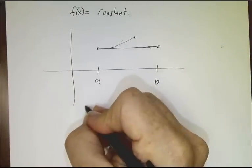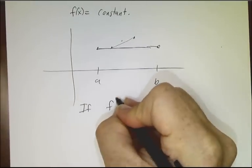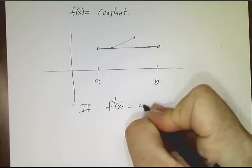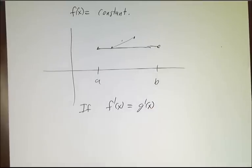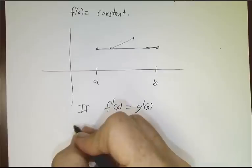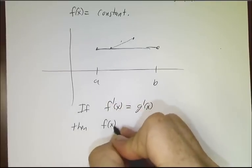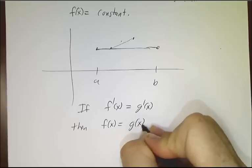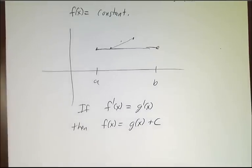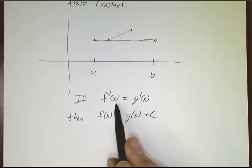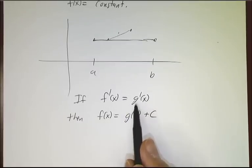What that also says is if you have two functions that have the same derivative, then the difference of those two functions is a constant, because the derivative of f minus g is zero.